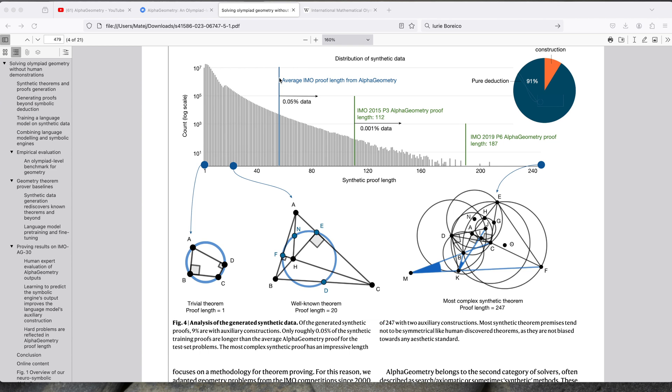Right here is a line is the average length of proof in the International Math Olympiads for the geometry problems. So that was only 0.05% of the data. And here's an example from 2015 that had a length of 112 steps. And that was less than 0.001% of the data.